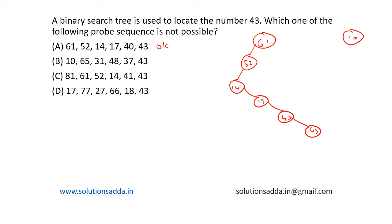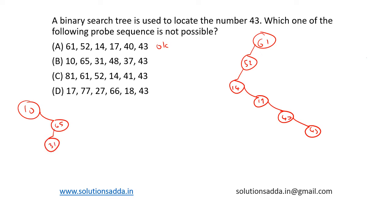Option B: we have 10. We move to the right because 10 is less than 43, so next is 65. Let's redraw it here: 10, 65. Next we have 31. 65 is greater than 43, so the next sequence goes left to 31. 31 is less than 43, so we move right to 48. 48 is greater than 43, so we move left to 37. 37 is less than 43, so the next probe sequence goes right to 43. This is also correct.